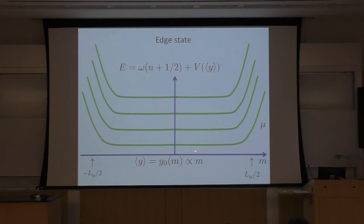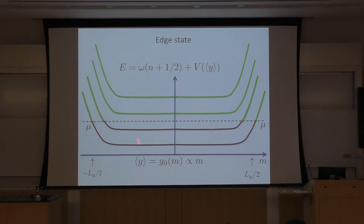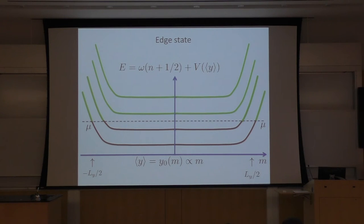I can linearize and expand energy near chemical potential, and I will get linear dispersions. The group velocity — the slope of energy — is positive at one edge, so electrons there go to the right. At the other side of the system, the slope is negative, so electrons go to the left. So I have two edges with counter-propagating modes. Along x direction, I have periodic boundary conditions; along y direction, I have cut the system. Large M means near one edge, very negative M means near the other. These are chiral edge states.